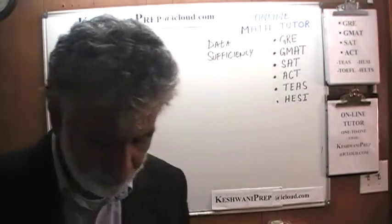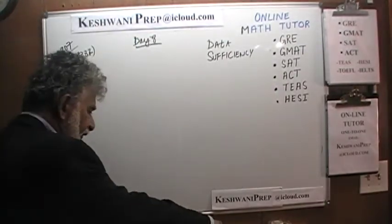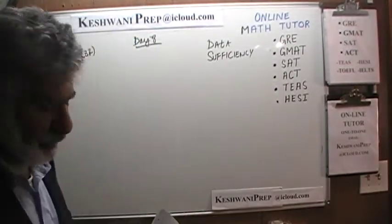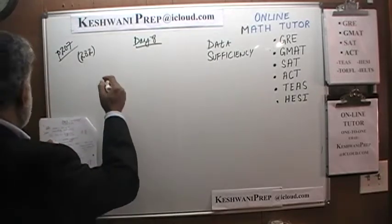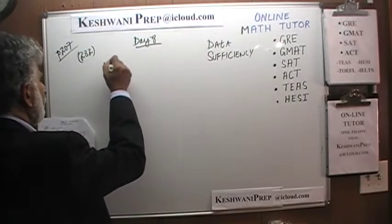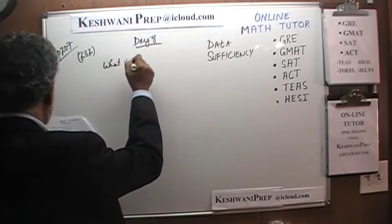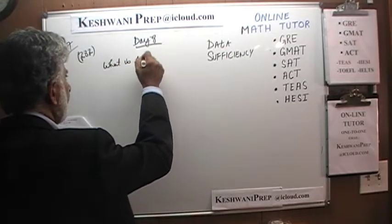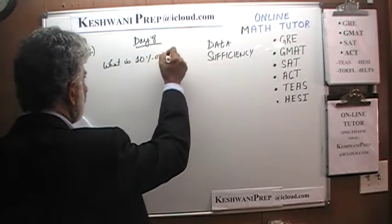Let's look at the last problem on page number 206, which is a very straightforward, very simple problem — almost silly — but we have to do it because it's there. The question is: what is 10% of Y?